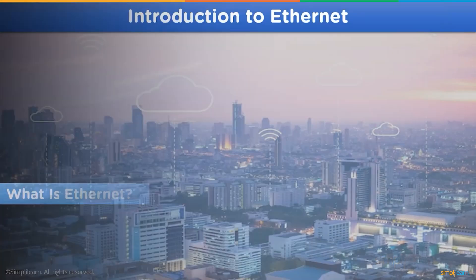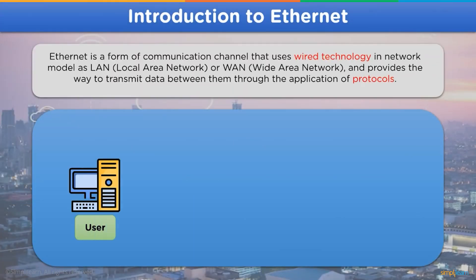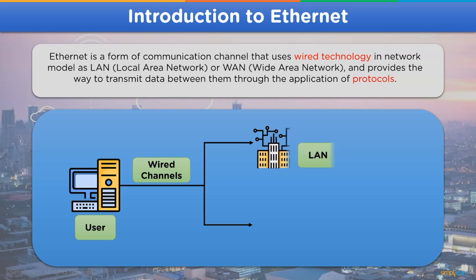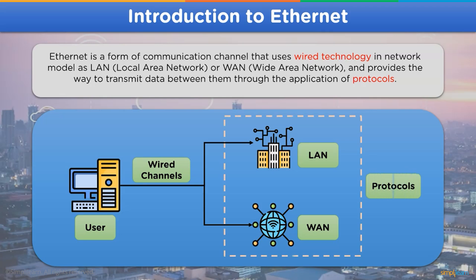What is Ethernet? Ethernet is a form of communication network that uses a wired medium to connect devices for data exchange in a network — for example, LAN, also known as local area network, and also WAN, known as wide area network. Ethernet also applies different protocols on the data to be transmitted over the communication channel efficiently and smoothly.